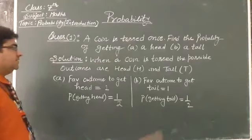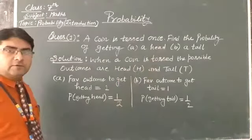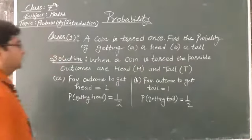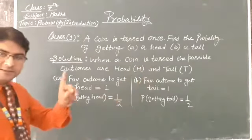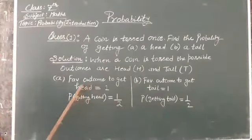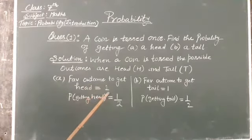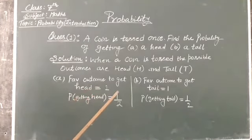So in the first case, what is the probability of getting a head? A head, that is one case. Total outcomes: two. So favorable outcome to get head is one. Therefore, probability of getting head is one by two.